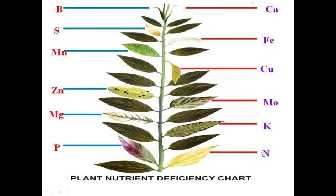If nitrogen is not supplied in the correct amount, the plant becomes pale yellow because it does not have sufficient nitrogen to make enough chlorophyll. If potassium is not supplied in a proper amount, it results in chlorosis or yellowing at the leaf margin, and necrosis or death of the leaf. If phosphorus is not supplied in a proper proportion, you can see dark bluish-green or purplish leaves.